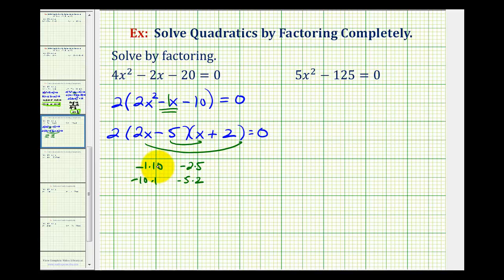Notice by doing this, the inner product is negative 5x and the outer product is 4x. Therefore, we do have our negative 1x, which is the middle term. So now we know this is factored correctly.